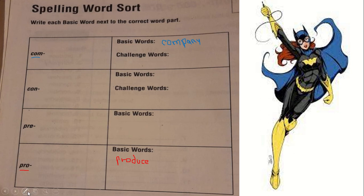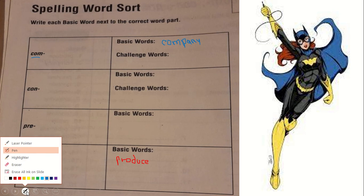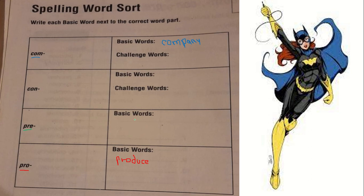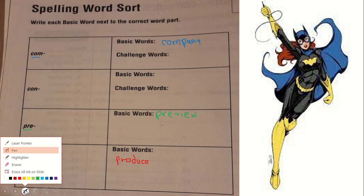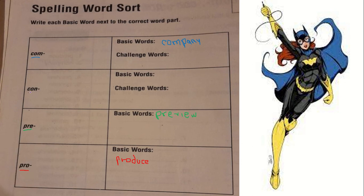Write the word company with blue. Then write the next word protect — already done — and preview. Write preview with green for the Pre words, a different color. Then write one word with Con — contest — with a different color, purple or orange, whatever color you have. We will go to the next word with four different colors.